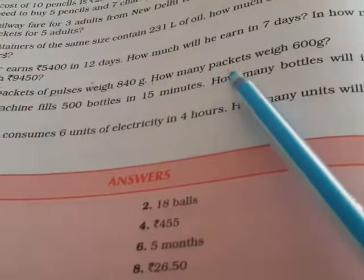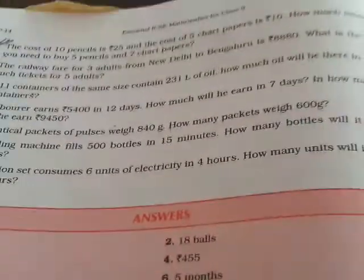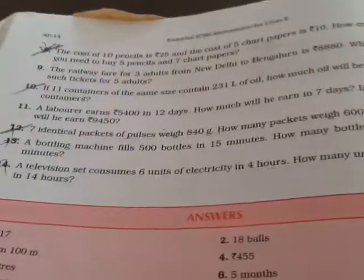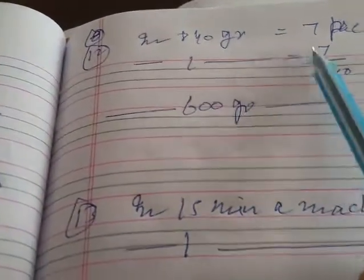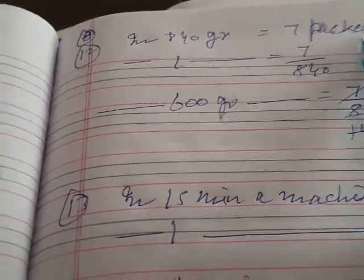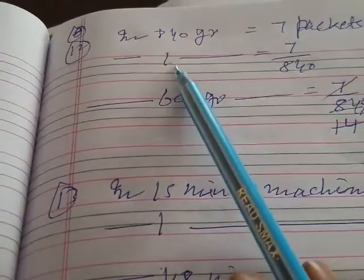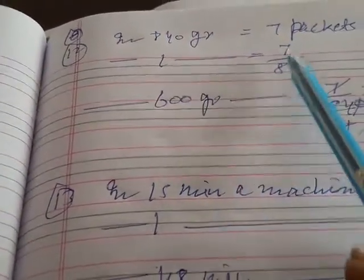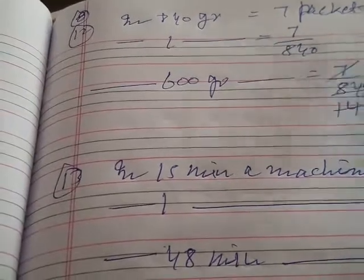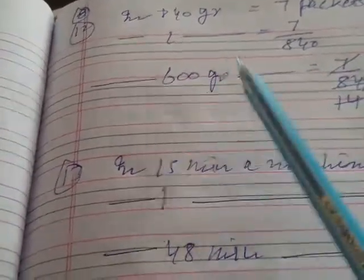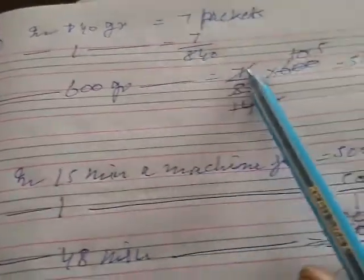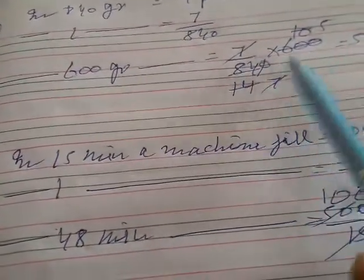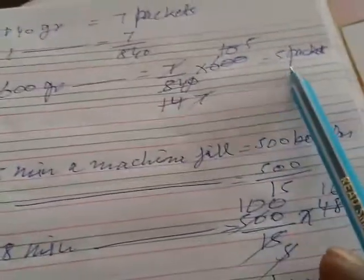You can do this one easily. In 840 grams there are 7 packets, so 1 gram equals 7 upon 840 packets. In 600 grams: 7 upon 840 into 600 equals 5 packets.